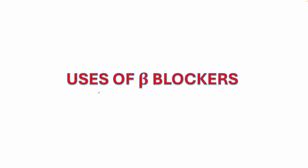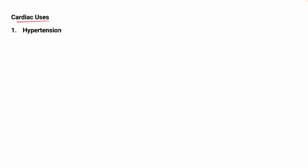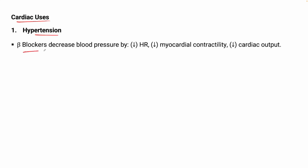Today we are going to discuss the uses of beta blockers. First we will start with the cardiac uses. The first cardiac topic is hypertension. Beta blockers decrease blood pressure by decreasing the heart rate, decreasing the myocardial contractility, and cardiac output. As there is a decrease in BP, the following factors will automatically decrease.